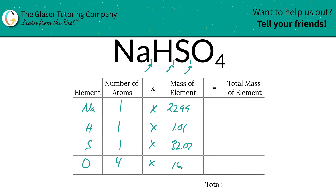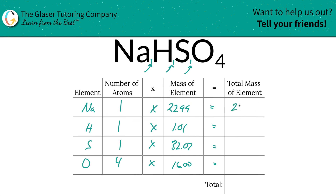And then oxygen is 16. Then we're going to find the total mass of each element by simply multiplying across the row. So for sodium, the total mass is 22.99; hydrogen is 1.01; sulfur is 32.07; and oxygen is 64.